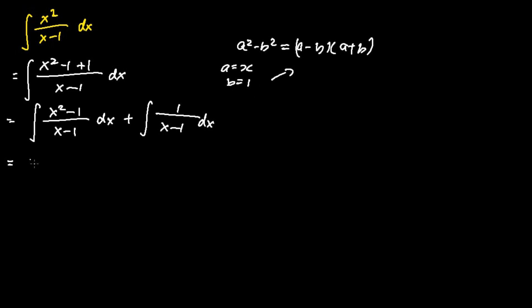And then applying the formula to the numerator of the first integral, I get the following: x minus 1 times x plus 1 over x minus 1 dx. And we copy the second integral as it is.